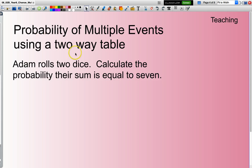The typical sort of question you'd be looking to answer: Adam rolls two die. Calculate the probability the sum is equal to seven.